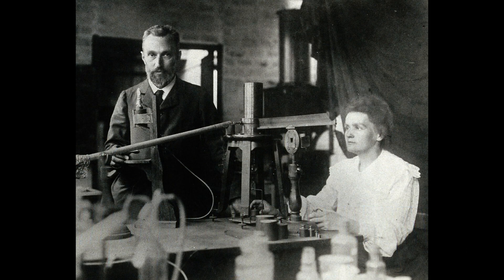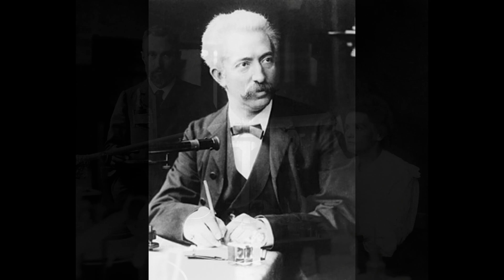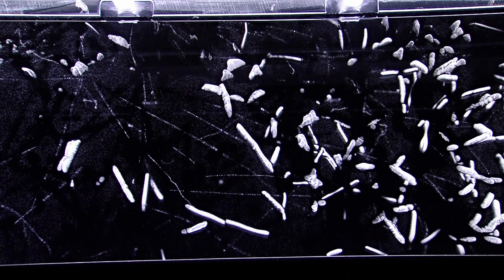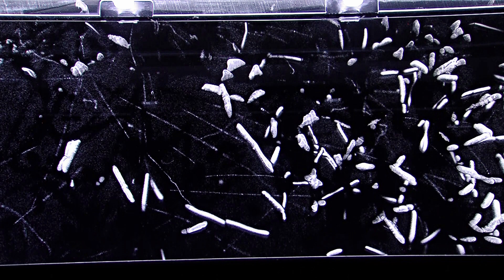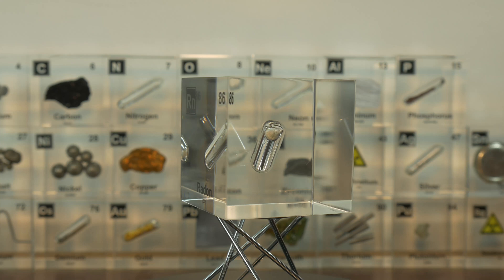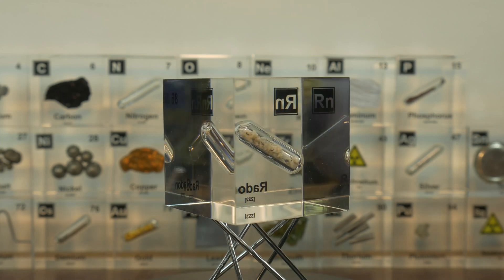These observations spurred the curiosity of Friedrich Ernst Doorn, a German physicist. In 1900 Doorn conducted experiments with radium salts and noted that they released a radioactive gas which he called radium emanation. Now to confirm its gaseous nature, Doorn conducted containment experiments trapping the emanation in sealed glass tubes. By observing the gas properties, he deduced that it was a unique radioactive substance and not just a chemical reaction or contamination.